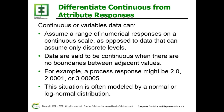We want to describe how we can differentiate continuous from attribute responses. Continuous or variables data can assume a range of numerical values on a continuous scale, as opposed to data that can assume only discrete values. For example, we might have values that are 3.005 or 2.001.